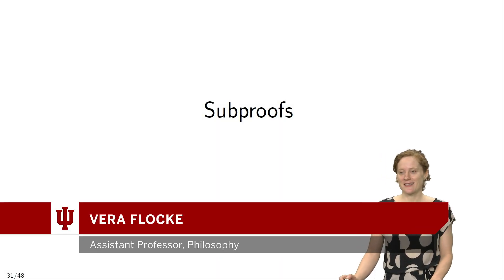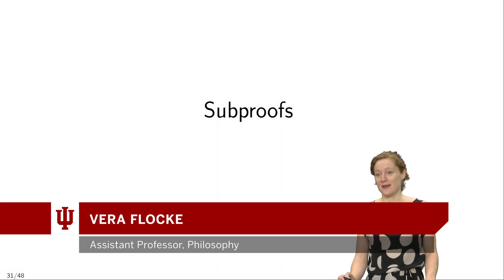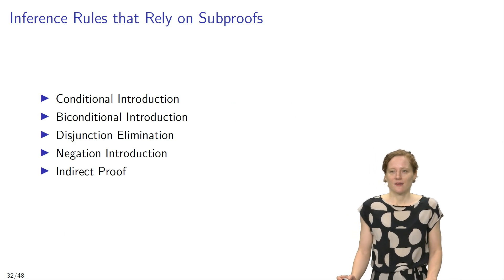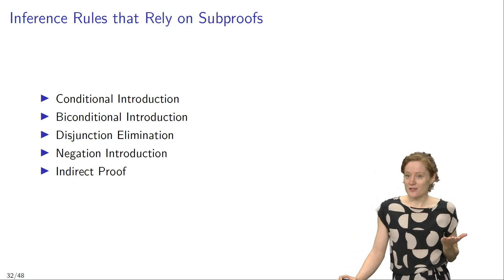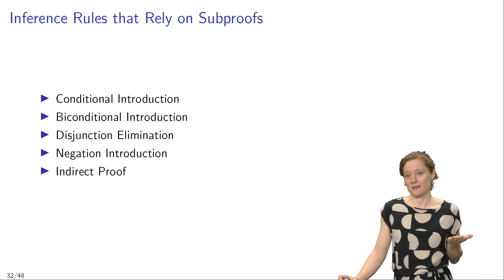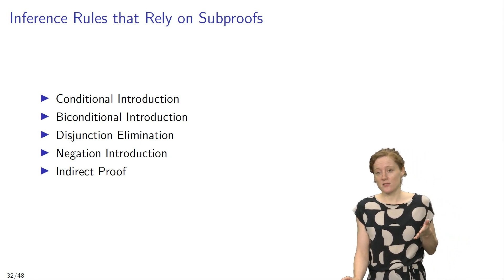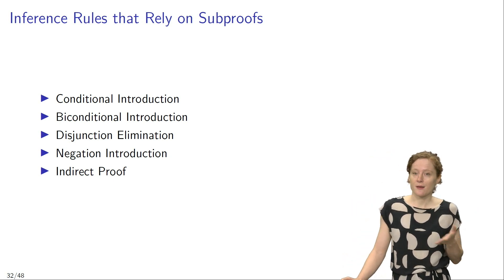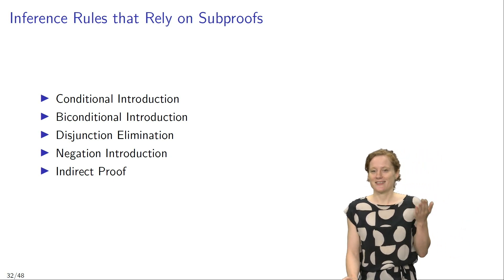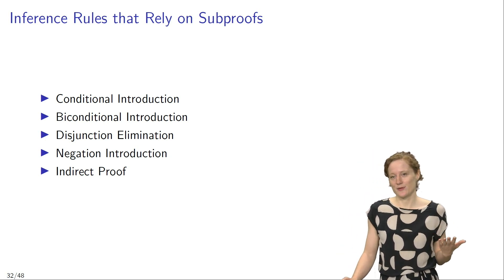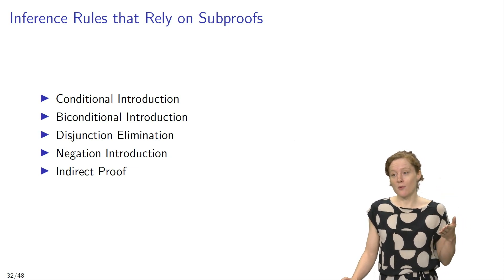We saw that conditional introduction is a rule of inference that makes use of a sub-proof. Let's talk about sub-proofs in more detail. Conditional introduction is just one of several inference rules that rely on sub-proofs. In particular, the following rules all make use of sub-proofs: conditional introduction, bi-conditional introduction, disjunction elimination, negation introduction, and indirect proof. So far we have only encountered the first of these, but more are to come.